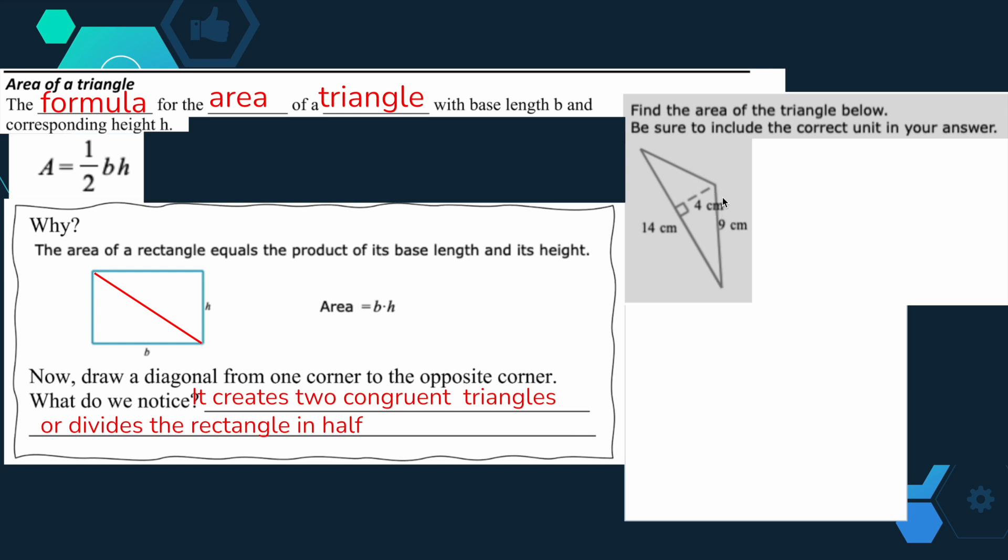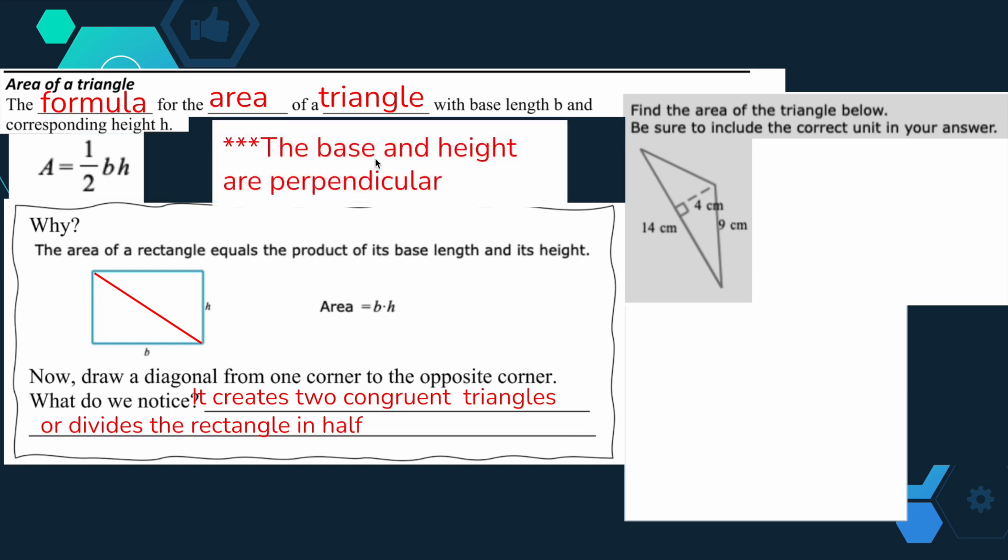With this one, they're giving us more information than is needed. The base and height are perpendicular. So we want to find that perpendicular, and those are the two pieces we want to use. So here's my base, and here's my height. As I'm identifying them, I'm plugging them into the formula.